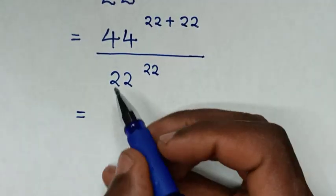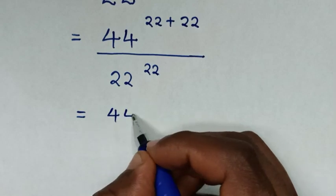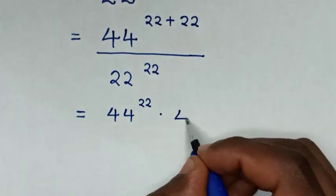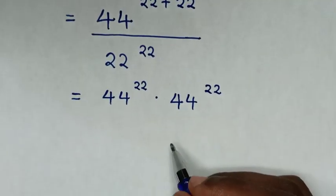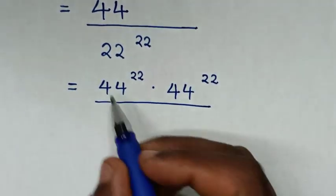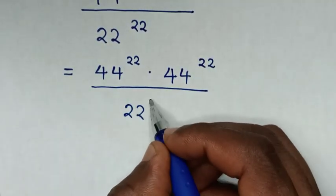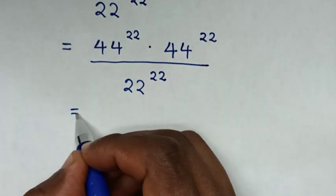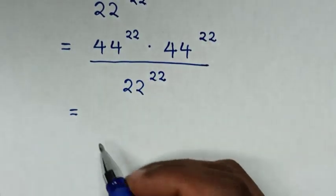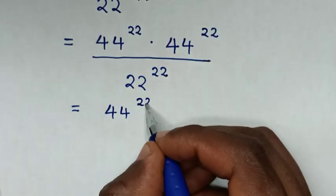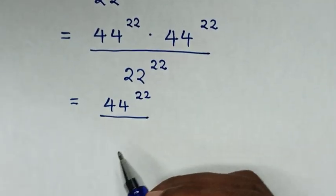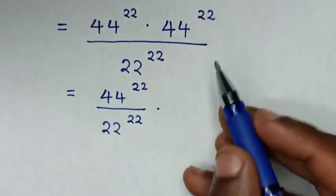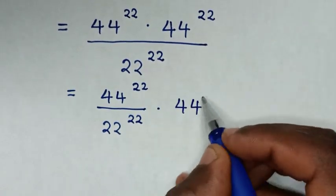In the next step, it will be equal to 44 power of 22, times 44 power of 22, over the denominator 22 power of 22. We divide this by this, so it will be 44 power of 22 over 22 power of 22, then times 44 power of 22.